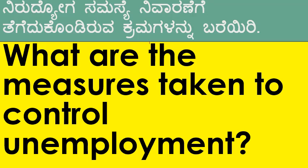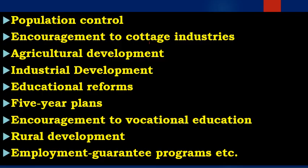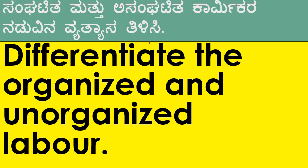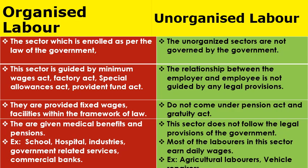Measures taken to control unemployment: population control, encouragement to cottage industries, agricultural development — at least six of these points to be mentioned. Differentiate organized and unorganized labor: when this question is asked, write a box with unorganized on the left side and organized on the right side, and go on differentiating them with examples.